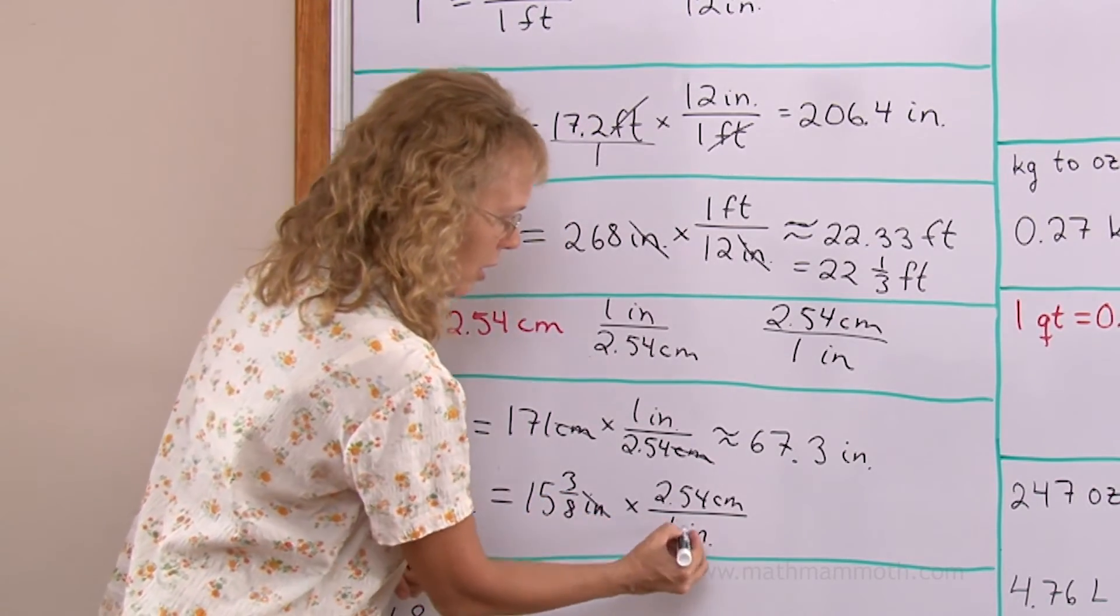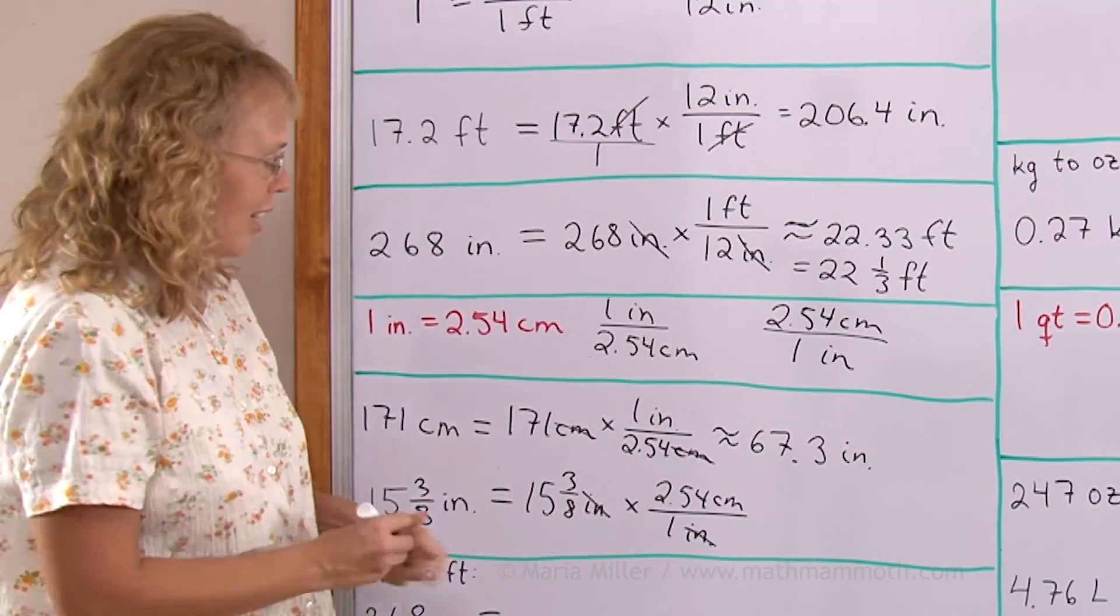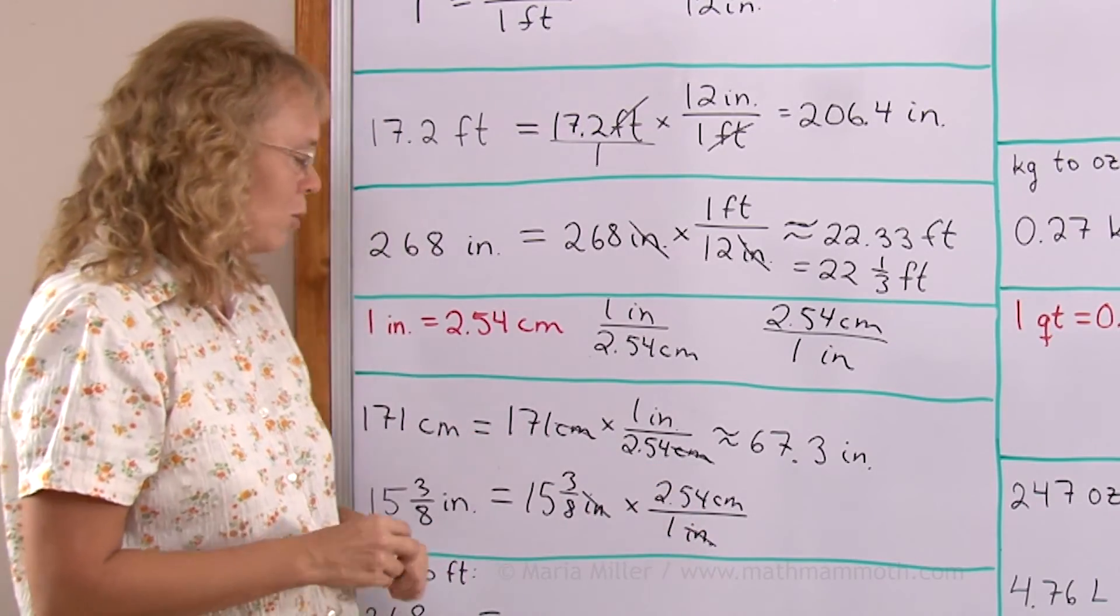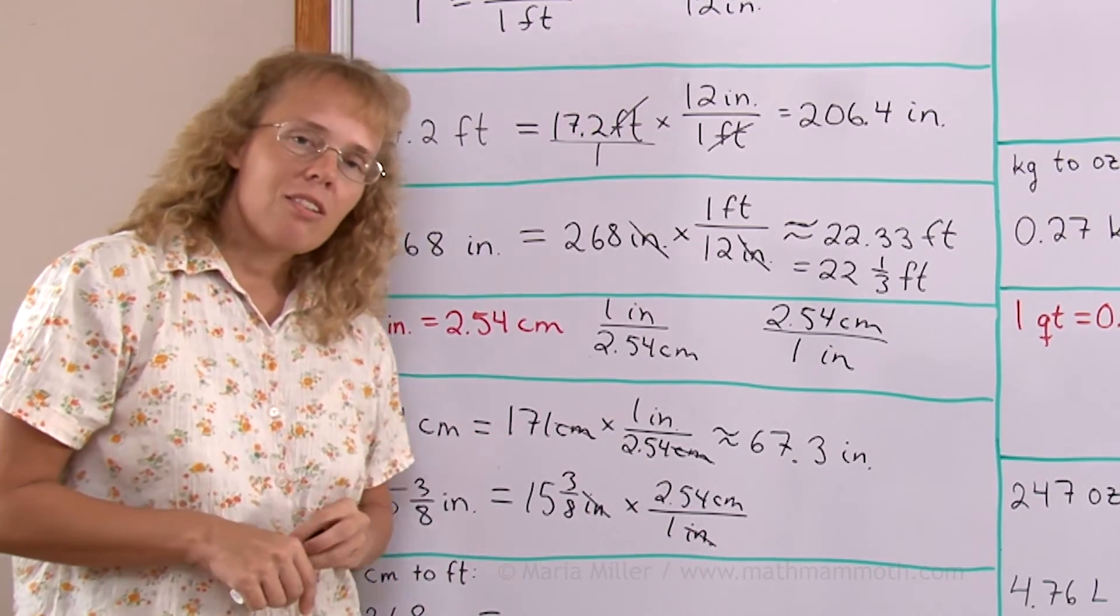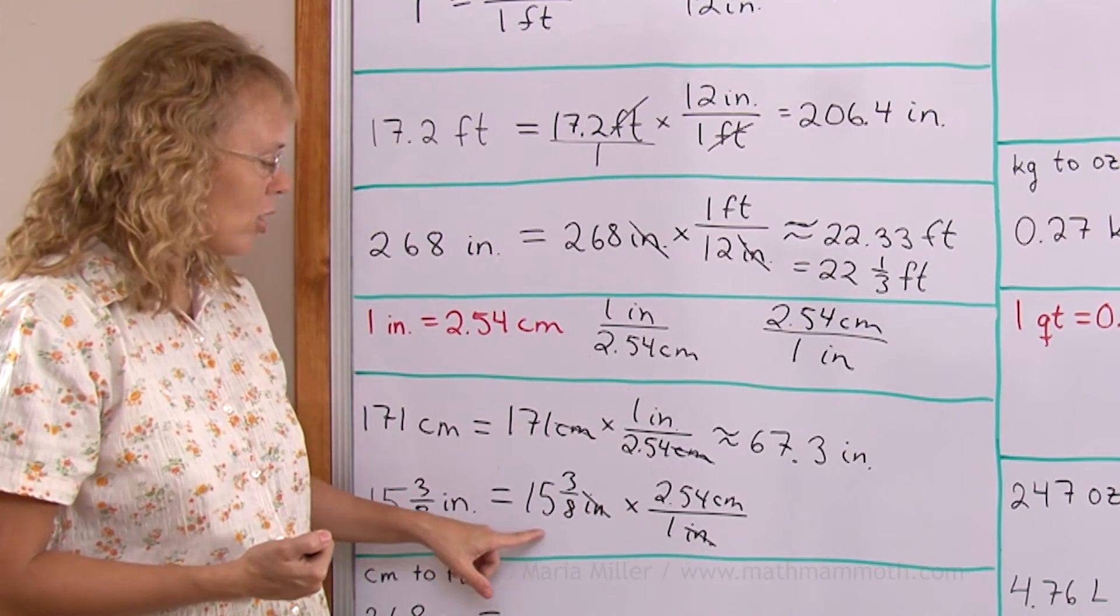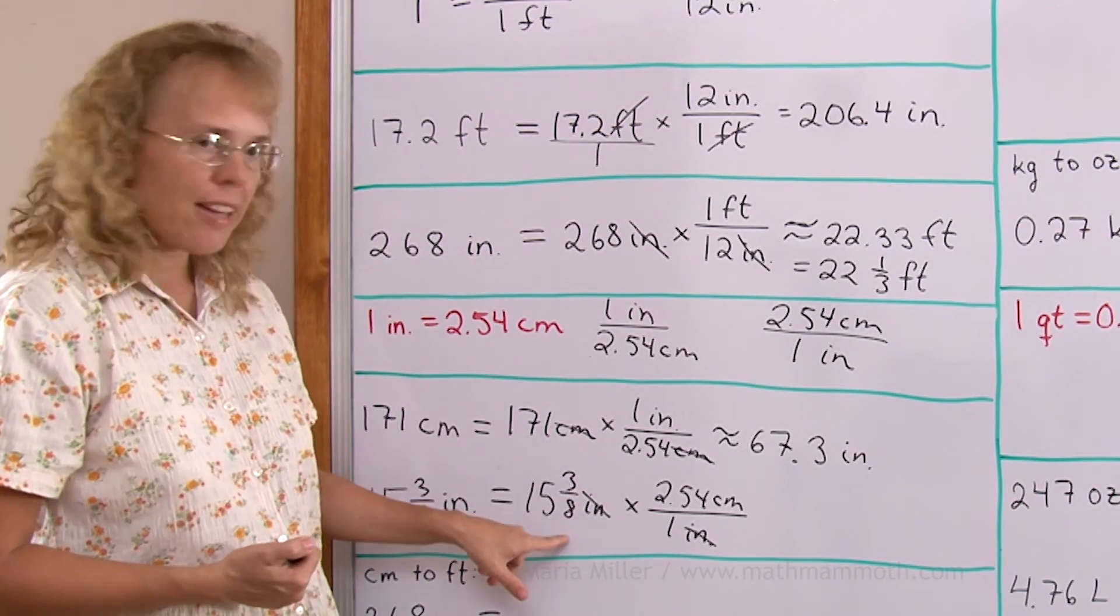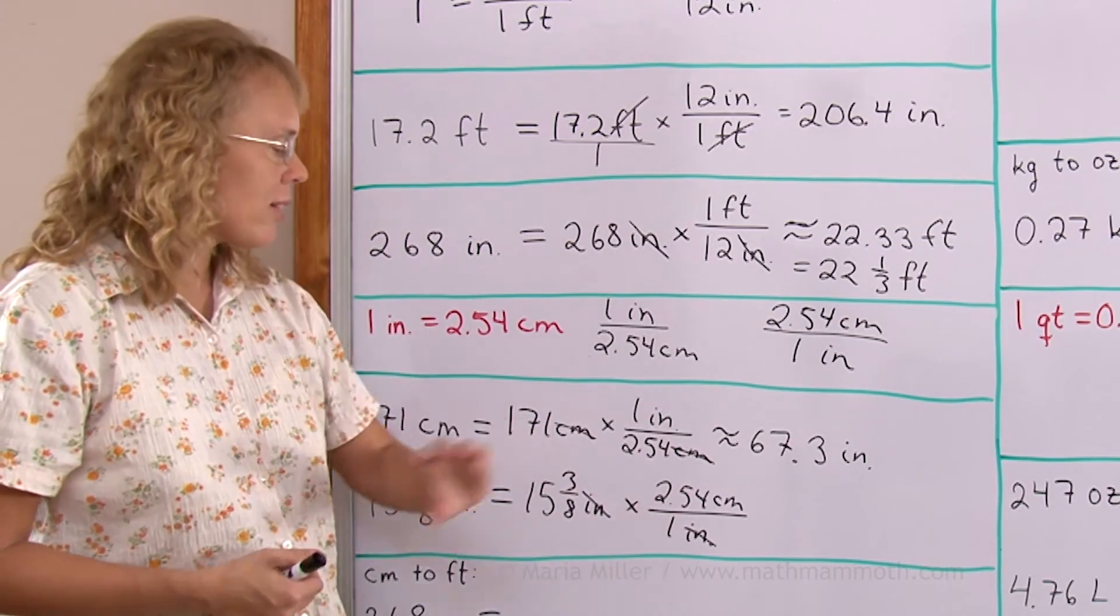Now these inches cancel out. Then I have this multiplication here to do with my calculator. Your calculator may have a button for fractions where you can actually enter 15 and 3 eighths into it and then just multiply by the decimal. If it doesn't, then before you do this,